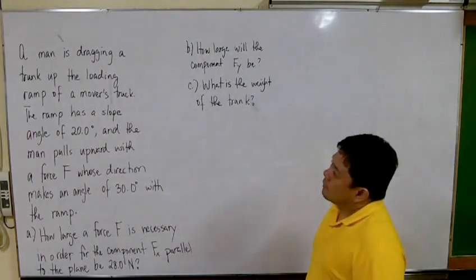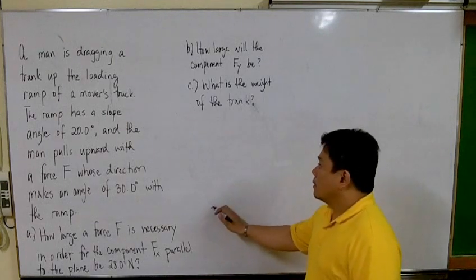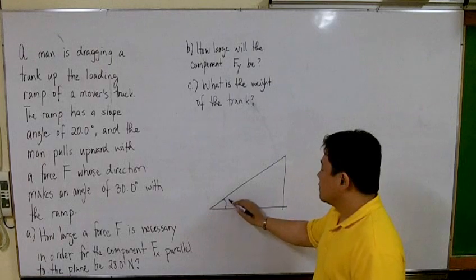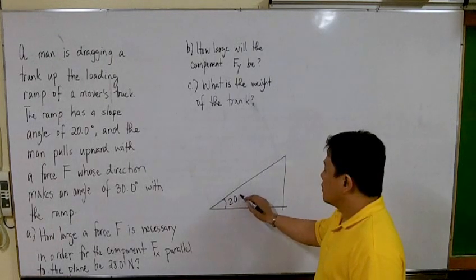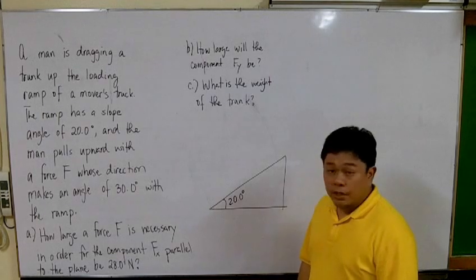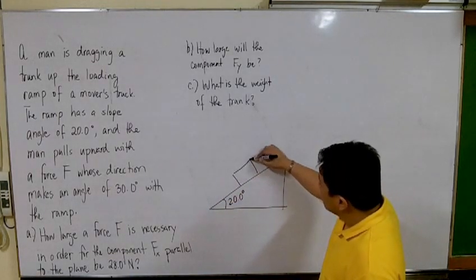A man is dragging a trunk up the loading ramp of a mover's truck. The ramp has a slope of 20 degrees, and the man pulls upward with a force F whose direction makes an angle of 30 degrees with the horizontal.